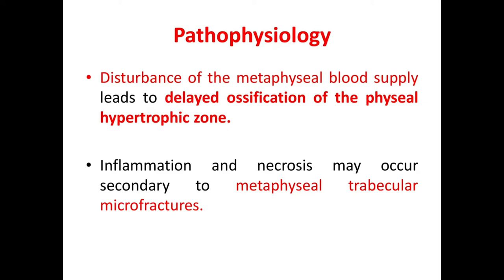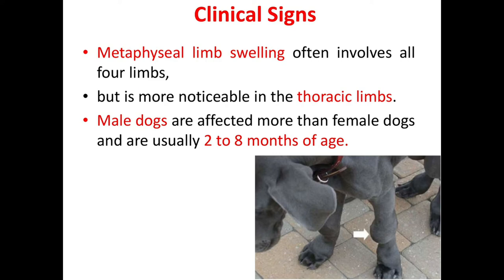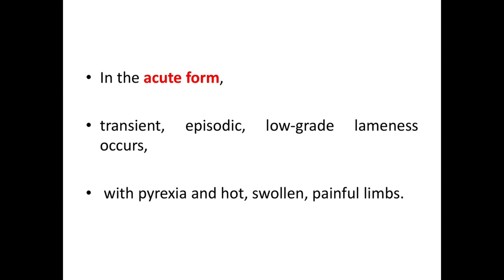Regarding pathophysiology, disturbance of the metaphyseal blood supply leads to delayed ossification of the physeal hypertrophic zone. Inflammation and necrosis occur secondary to metaphyseal trabecular microfractures. The clinical signs are metaphyseal limb swelling involving all four limbs, but it is more noticeable in the thoracic limbs, and males are more commonly affected.